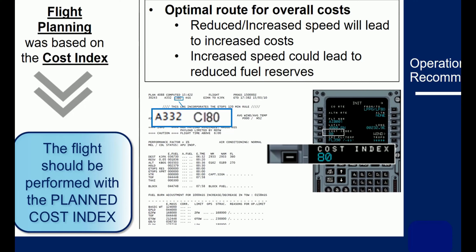Before your flight, the flight plan is computed at the optimum cruise Mach number. When you receive your flight plan, the times, fuel on board at each waypoint, and step climbs are all calculated. In flight, the crew should use the same Cost Index. If you fly at a different Cost Index — and hence different speeds — your actual flight will differ from the flight plan. The flight times, fuel on board, and rec max flight levels will deviate from predictions.